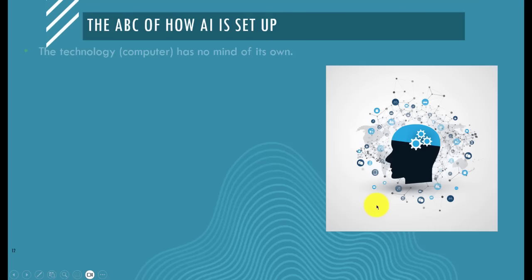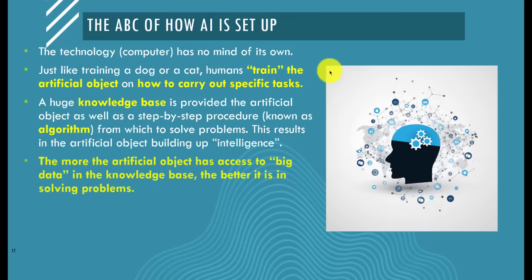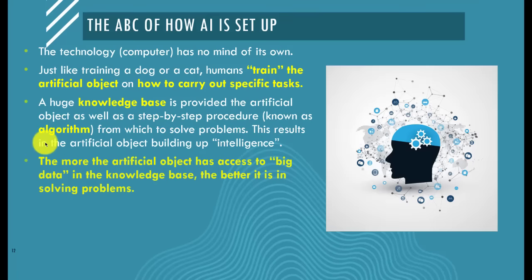The ABC of how AI is set up: the computer has no mind of its own. Like training a dog or a cat, the human trains the artificial object on how to carry out specific tasks. What is important here is the knowledge base — you keep giving the system data, providing it with a step-by-step procedure. That step-by-step procedure is known as an algorithm, which we'll look at in the next lesson.